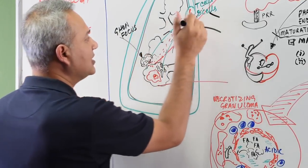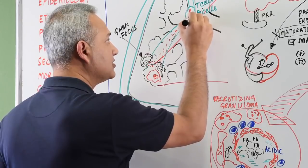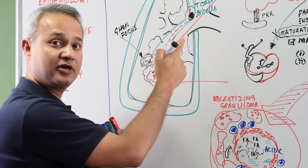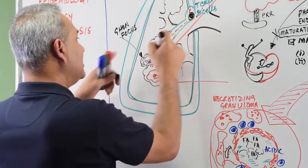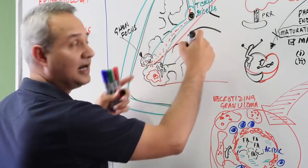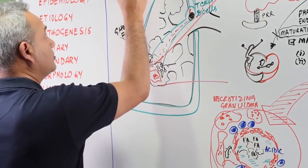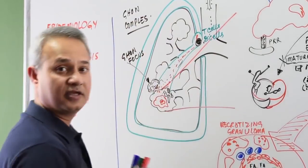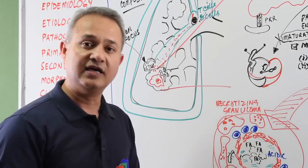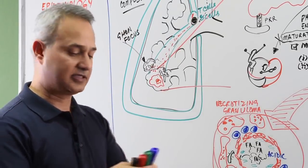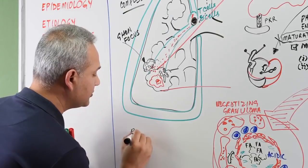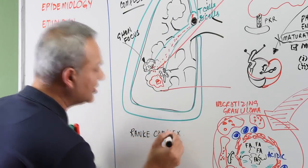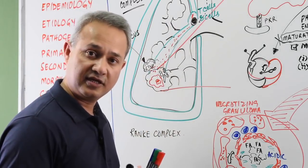So, this caseation present in the parenchyma of the lung is called Ghon focus. If the same thing happens in the lymph nodes as well, which it happens, same caseation and same necrosis and same granuloma formations present in the lymph node, then these two things together are called Ghon complex. This calcification, when seen in the x-ray is called Rankey complex.